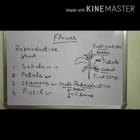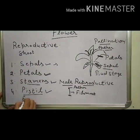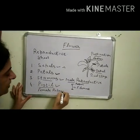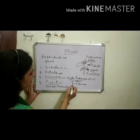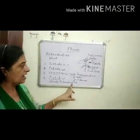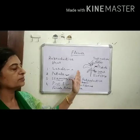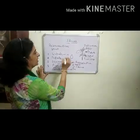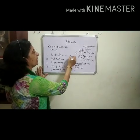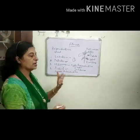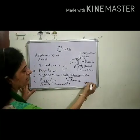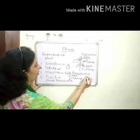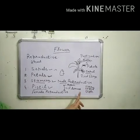After that, pistil. Pistil is the female reproductive part of a flower. We can't see it completely from the outer side. It is the swollen part of a flower and it has three parts: style, stigma, and ovary.